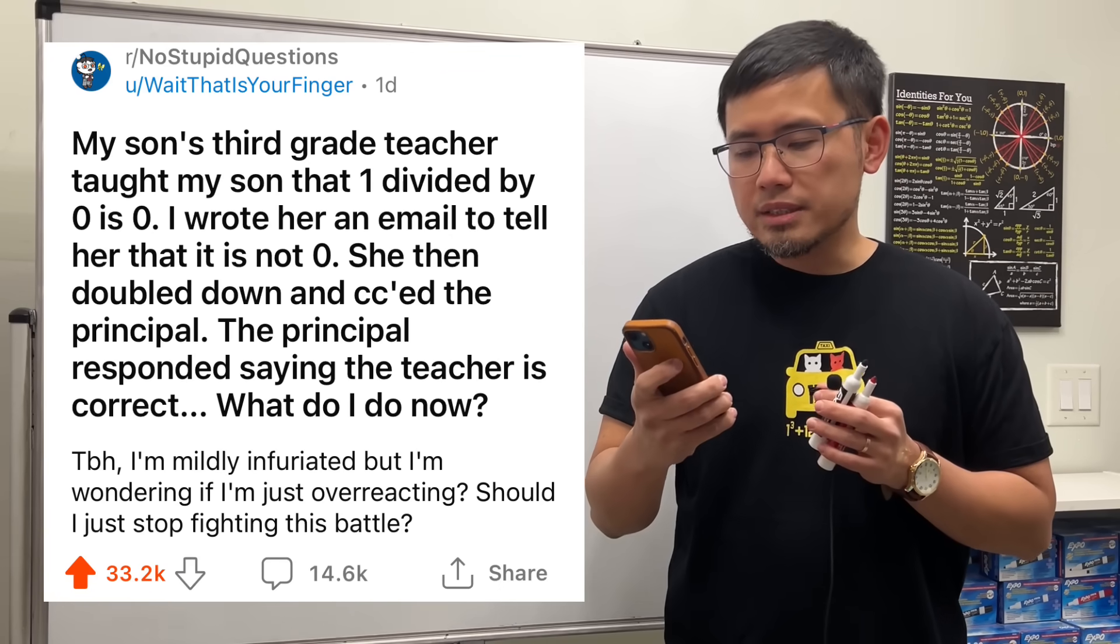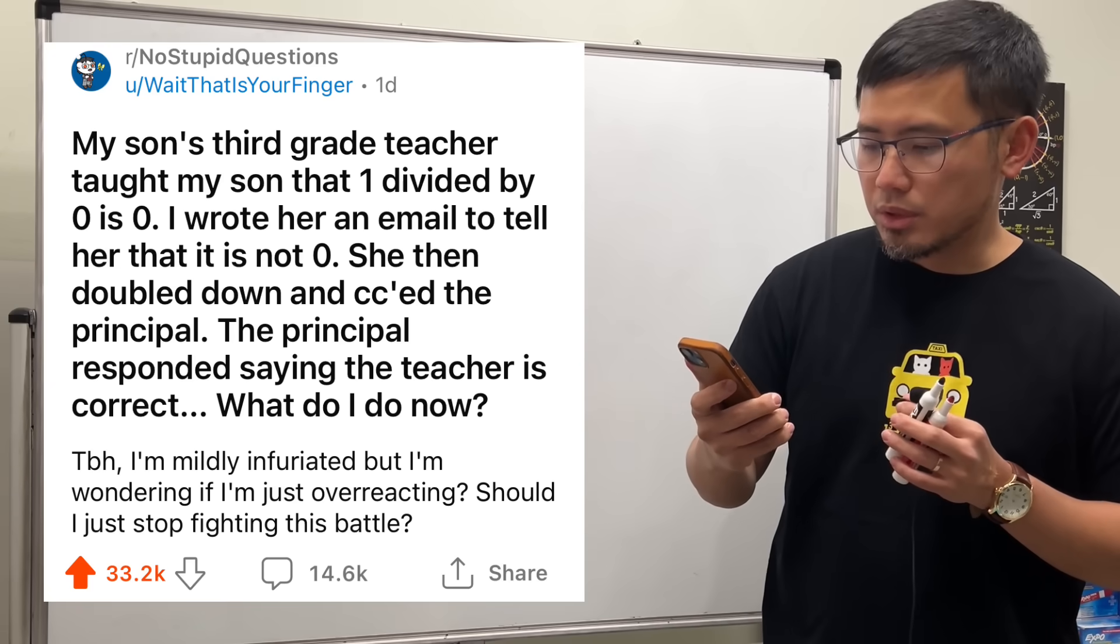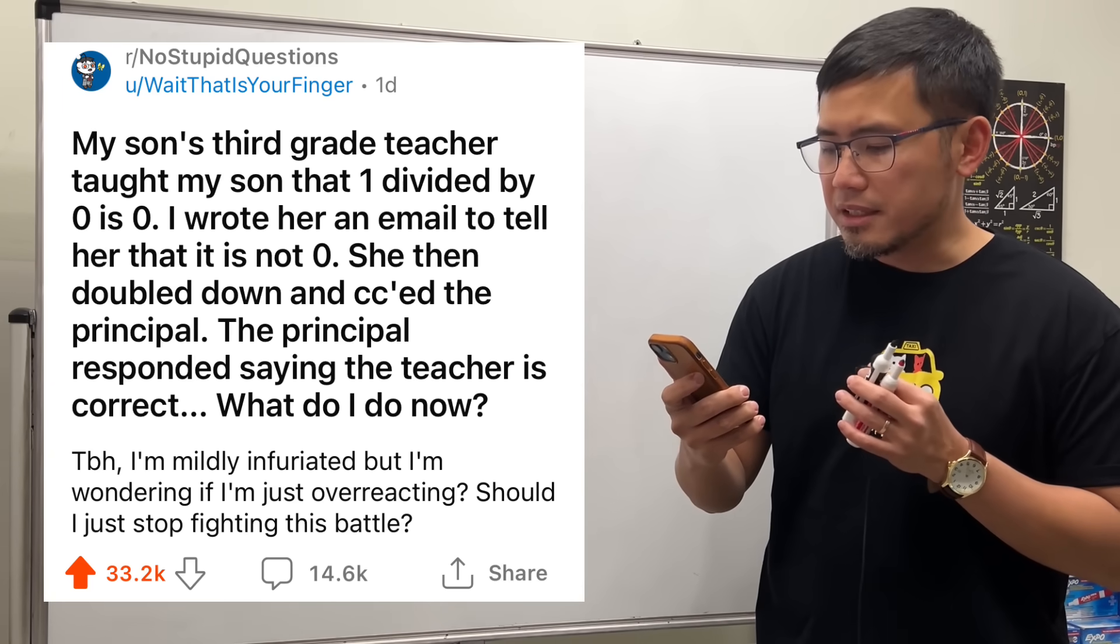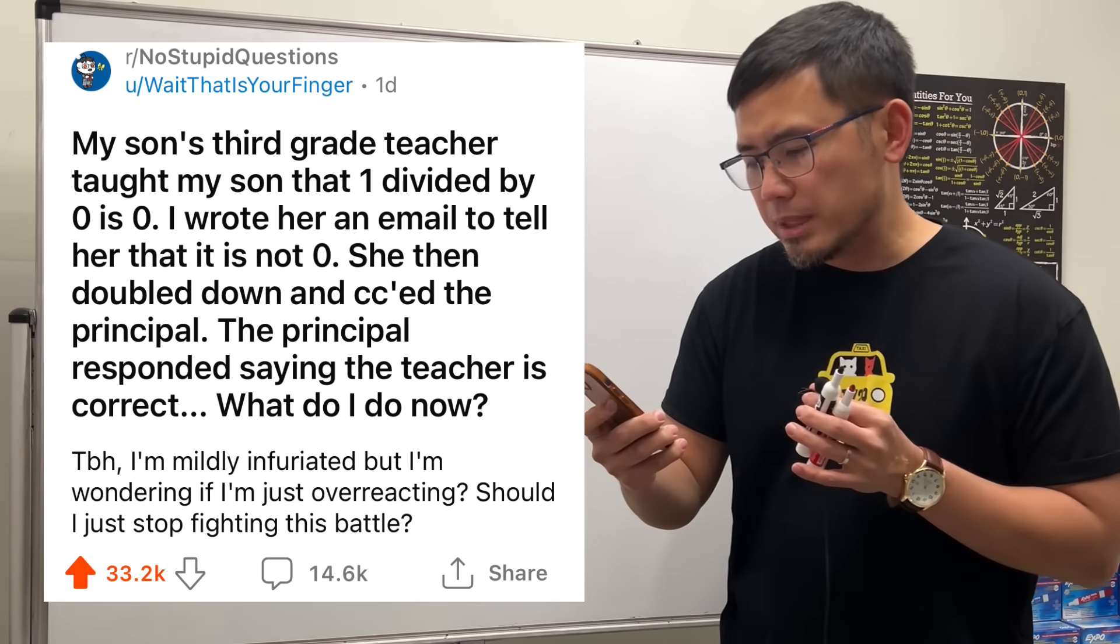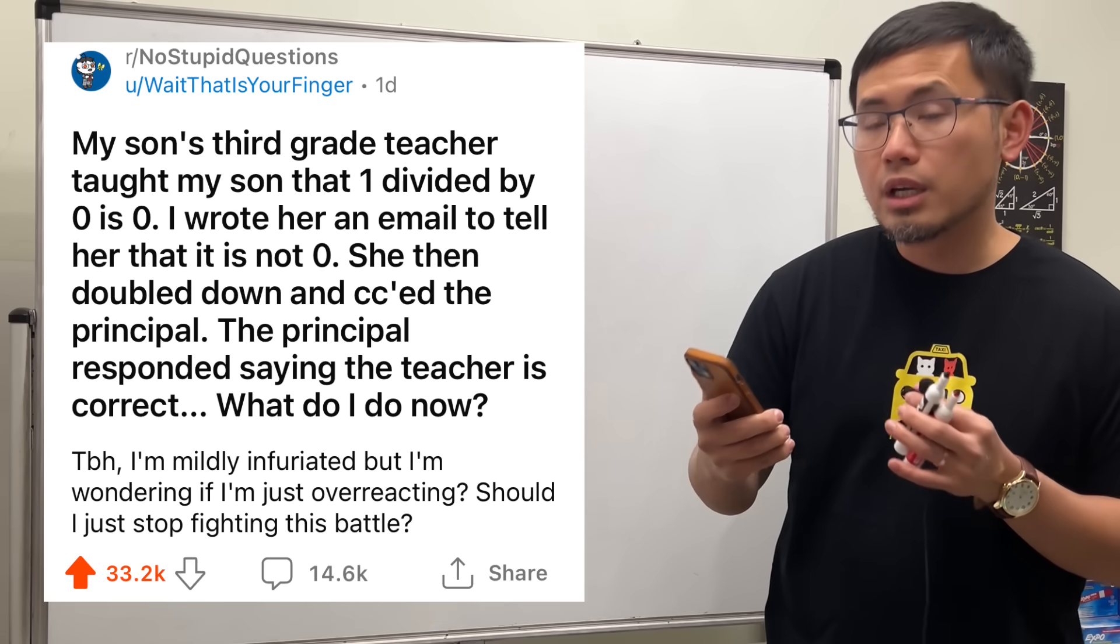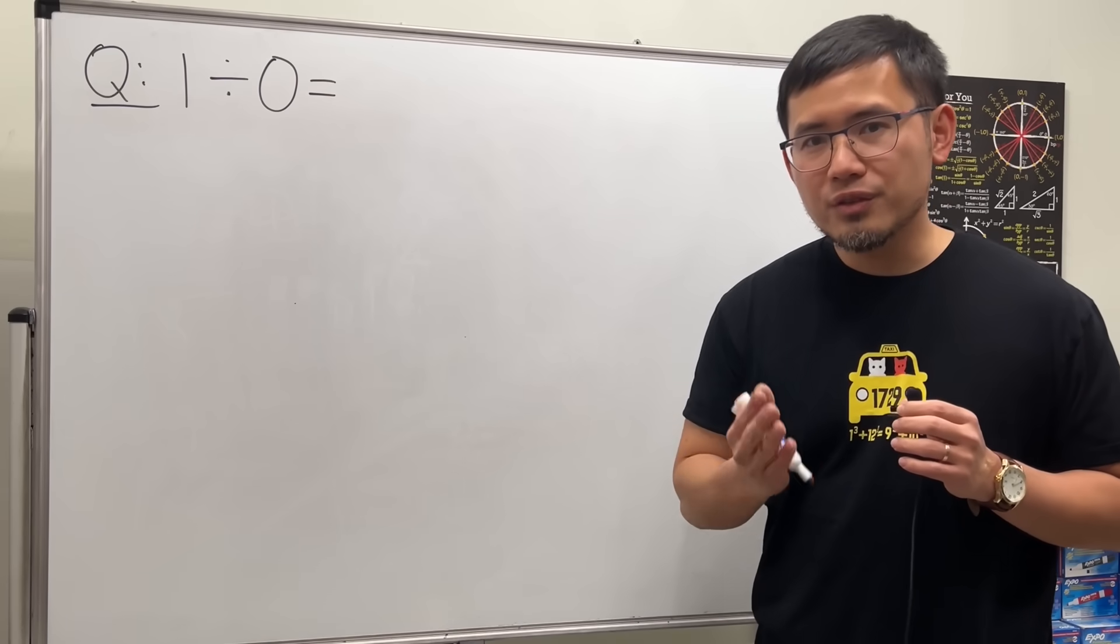So I just saw this on Reddit. It says, my son's third grade teacher told my son that 1 divided by 0 is 0. I wrote her an email to tell her that it is not 0. She then doubled down and cc'd the principal. The principal responded saying the teacher is correct. What do I do now? If you want to see the original post, link will be in the description for your convenience.